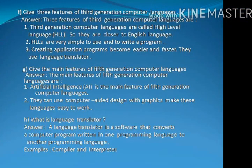Question: Give 3 features of 3rd generation computer languages. Answer: Number 1: 3rd generation computer languages are called high level languages, in short HLL, so they are closer to English language. Number 2: HLLs are very simple to use and to write a program. Number 3: Creating application programs becomes easier and faster; they use a language translator.